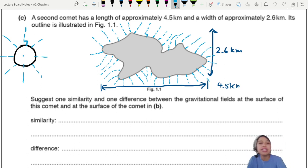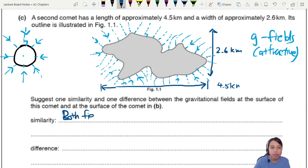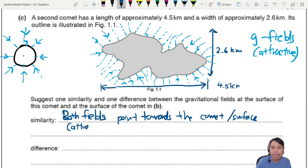What's the similarity? Something same is that these are both gravitational fields, and gravitational fields are generally attractive fields. Any mass comes in, they'll be attracted. We draw the arrows to show where a mass would go. If you put a mass, it will go towards it. Same for the comet - I can draw arrows everywhere, arrows that will attract things to the comet. So both fields point towards the comet or the comet surface, and this indicates this is an attractive field.